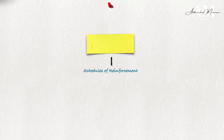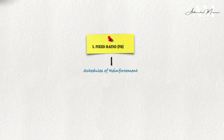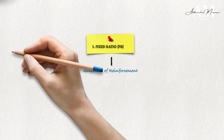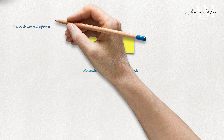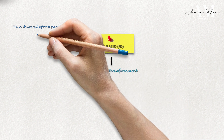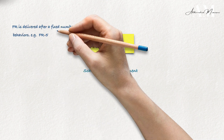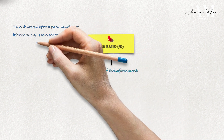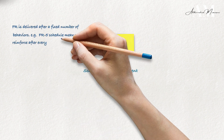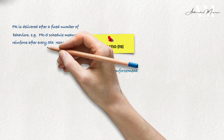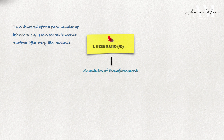First, intermittent reinforcement can take the form of fixed ratio, which means it is delivered after a fixed number of responses. For example, a fixed ratio five schedule would mean reinforcement is given after every fifth response.